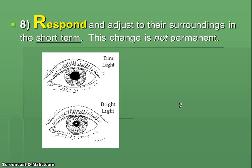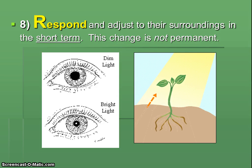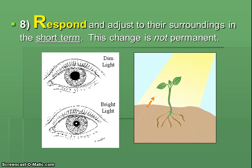Last but not least, living things respond to the environment — they adjust to their surroundings in the short term, and this change usually isn't permanent. Have you ever had someone shine a flashlight in your eyes? Your pupils dilate. Your body is responding to this environmental stimulus of the light in the short term. It's different from adapting, which is long-term and rather permanent. This isn't only for animals — it also happens to plants. This plant is responding to the light and growing towards it. You made it through your characteristics of life and your first set of notes — wonderful job!